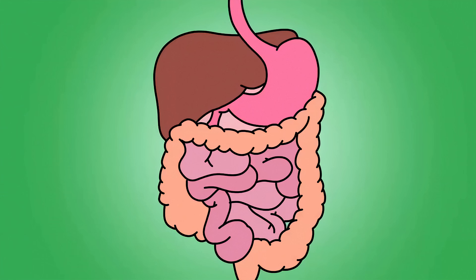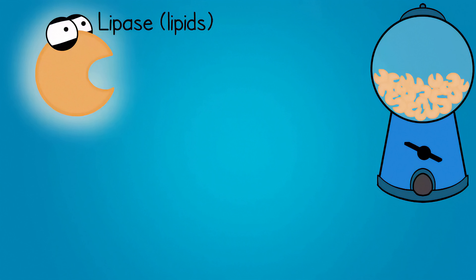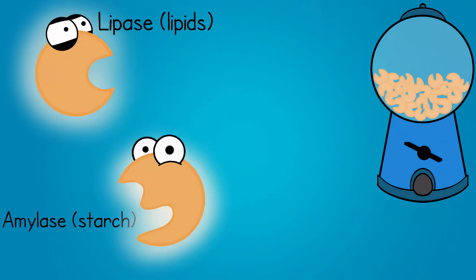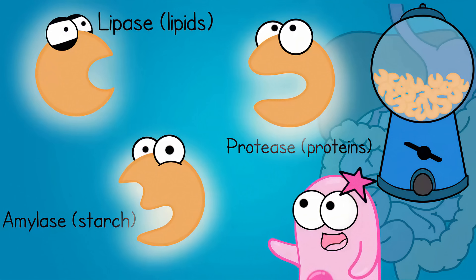Your digestive system uses all kinds of enzymes. You have lipase, which breaks down lipids — which are fats. You have amylase, which breaks down starch. You have protease, which breaks down proteins. As you can see, the digestive system is very involved with enzymes.